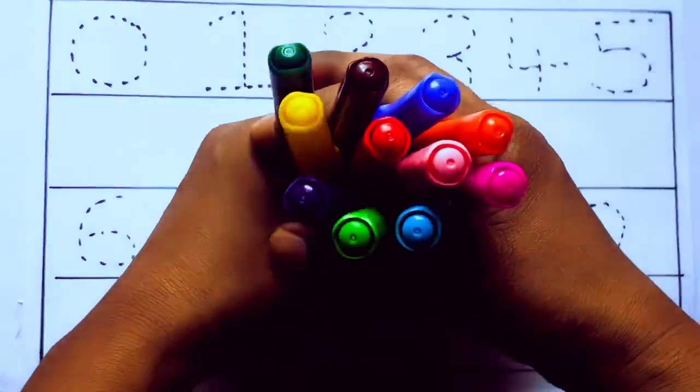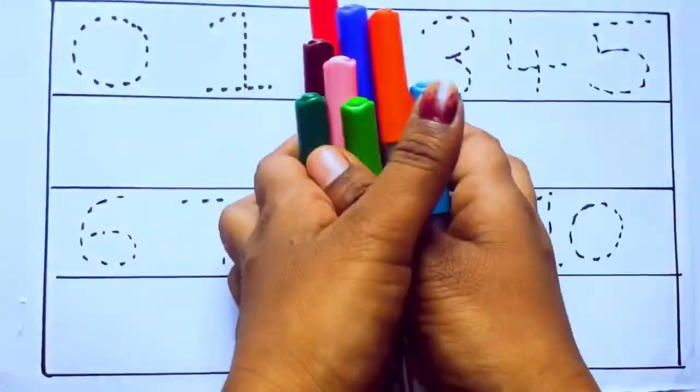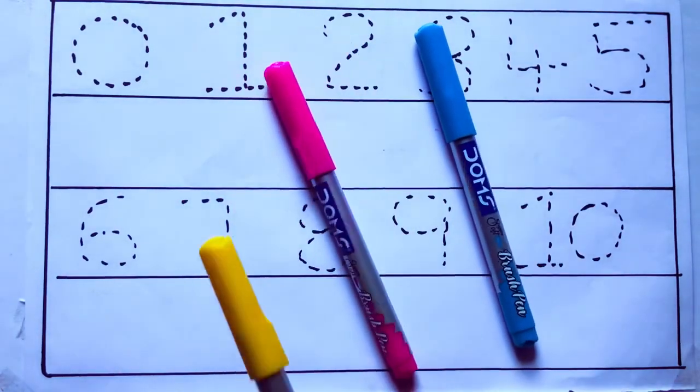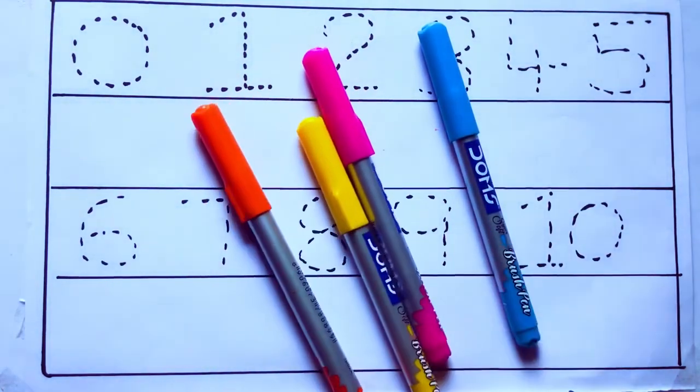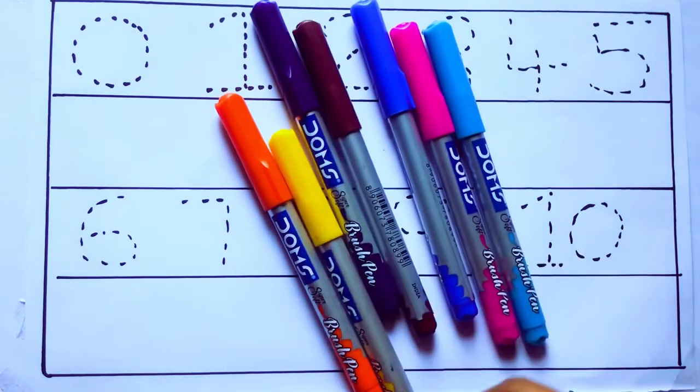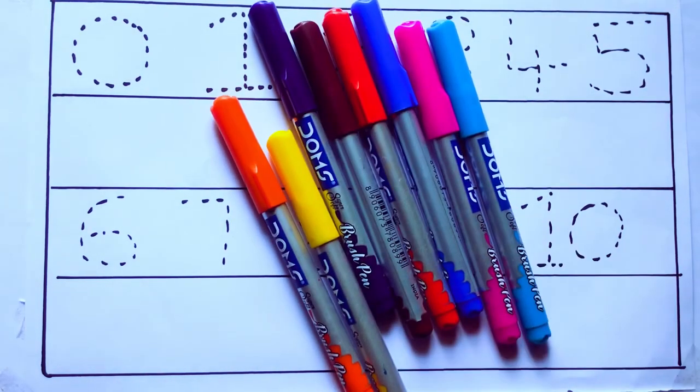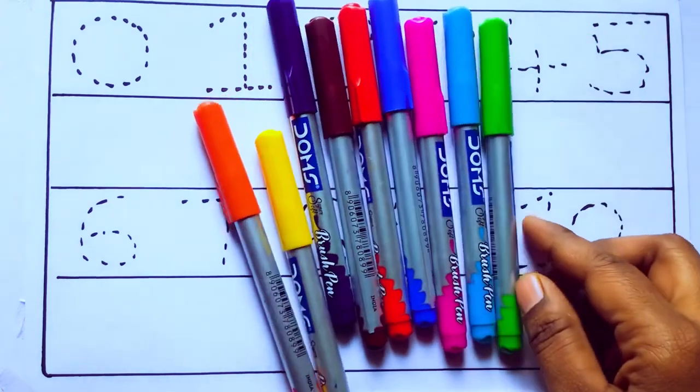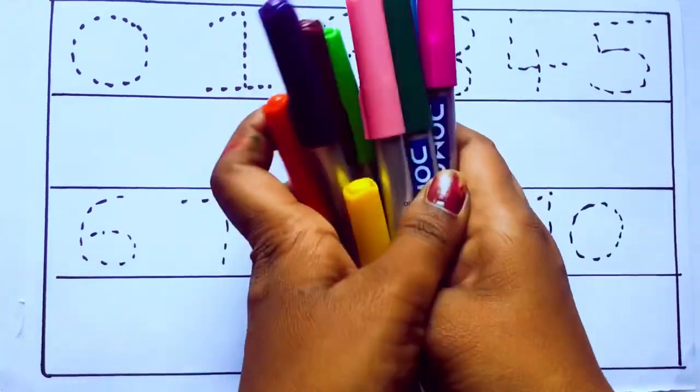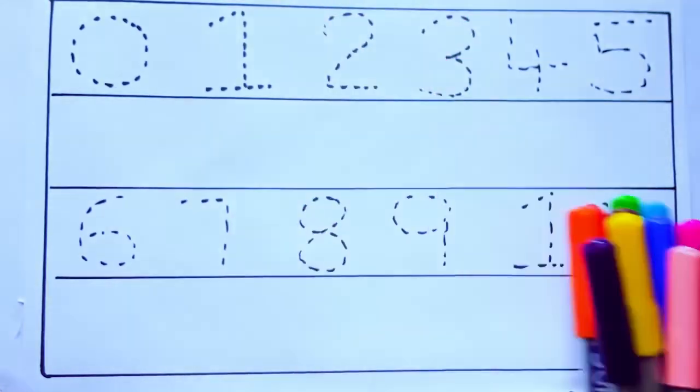Let's learn some colors. These are all the color pencils. Let's learn the names: sky blue color, pink color, yellow color, orange color, violet color, blue color, brown color, red color, green color, and pink color. Let's draw numbers.